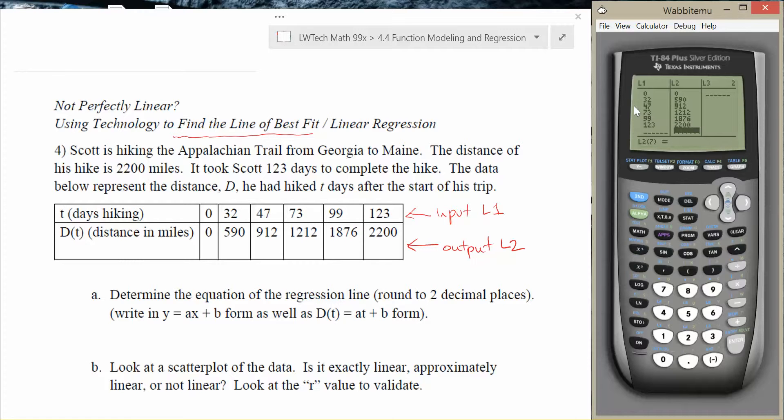It's real important in your calculator that the numbers in list one and list two are the pairs that go together, because that's the way our calculator is going to interpret it. Once we've entered all of the values in, then we can ask the calculator to find the line of best fit. We want it to calculate an equation for us.